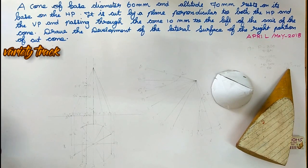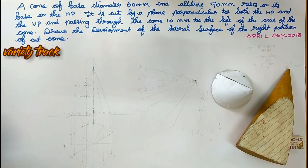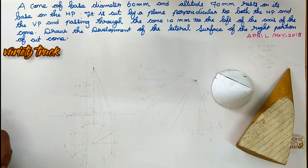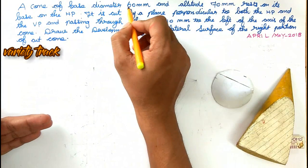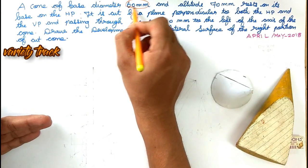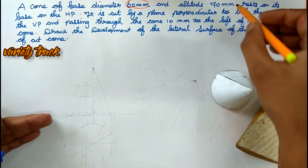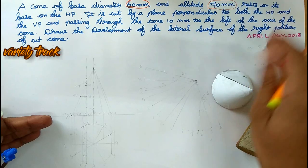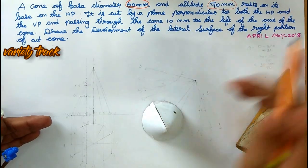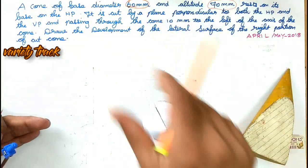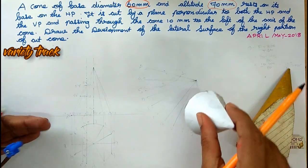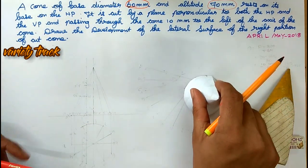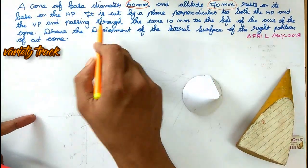That is diameter — a cone of diameter 60mm and altitude that is 70mm. This rests on its base, base on the HP, so it rests on the base on the HP.